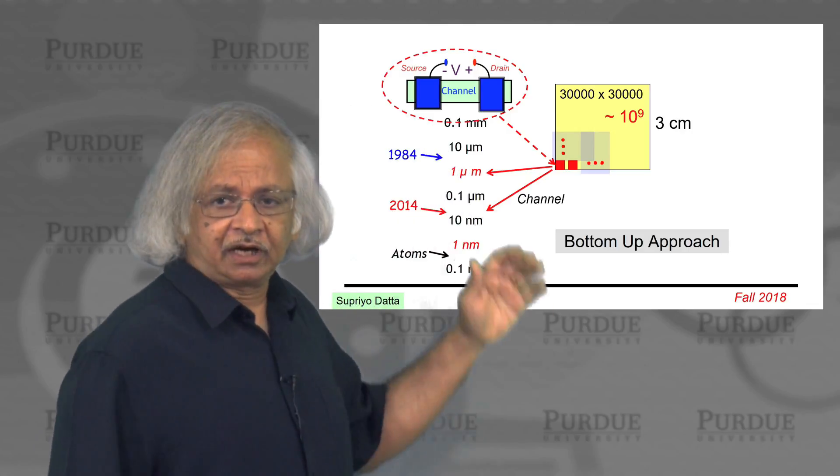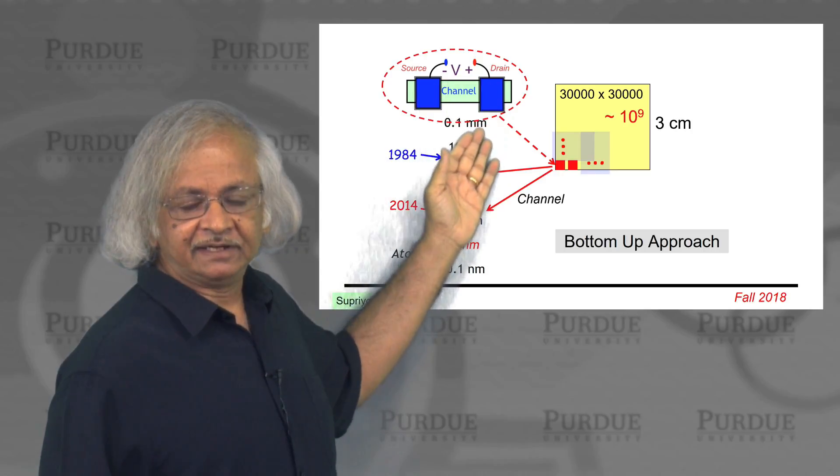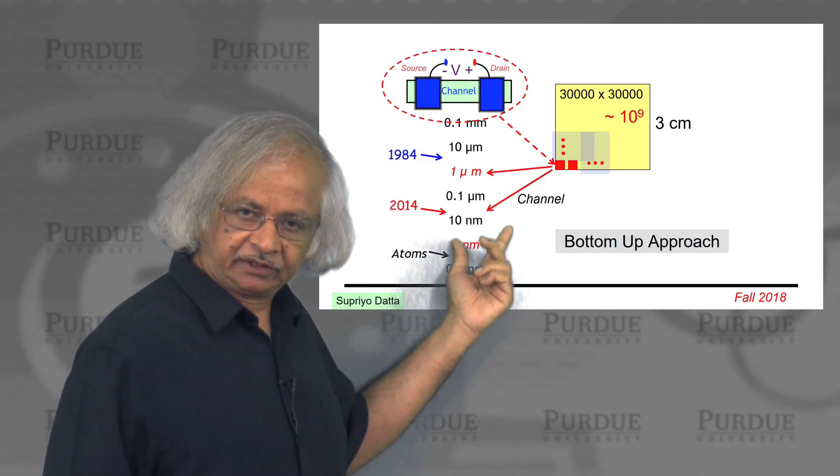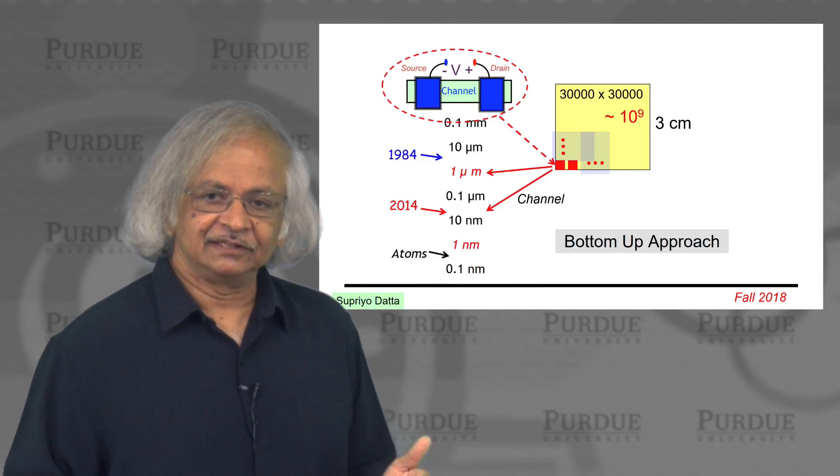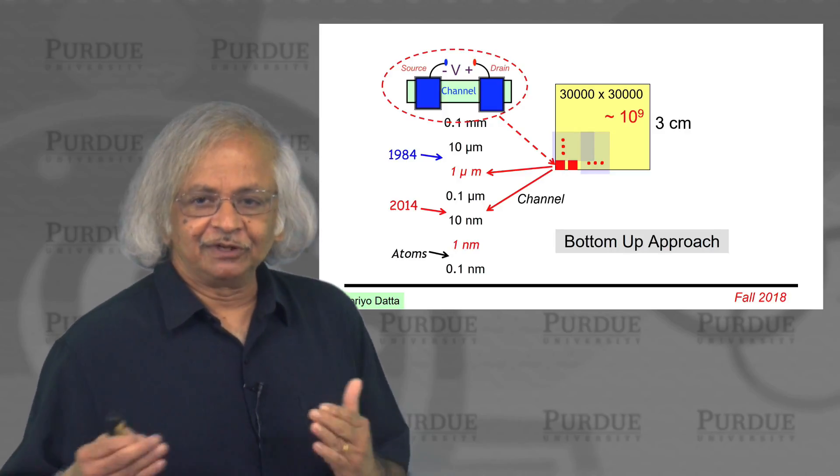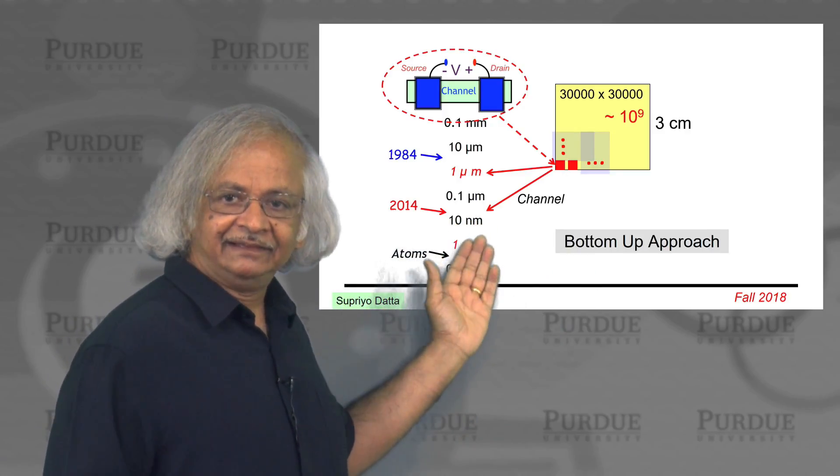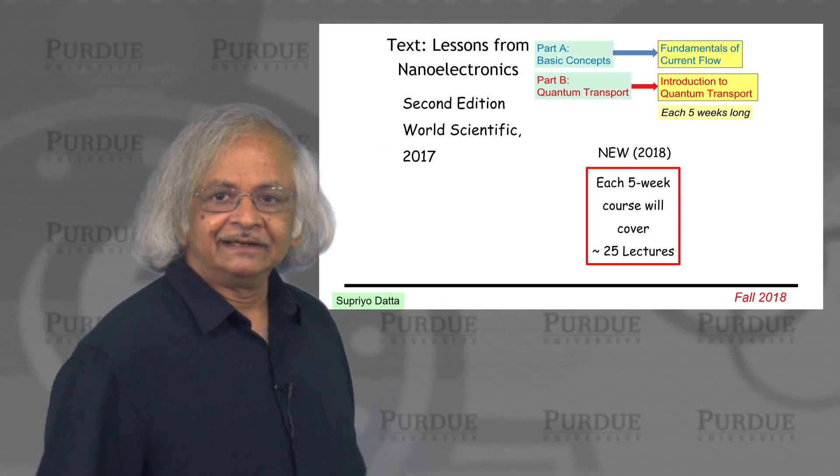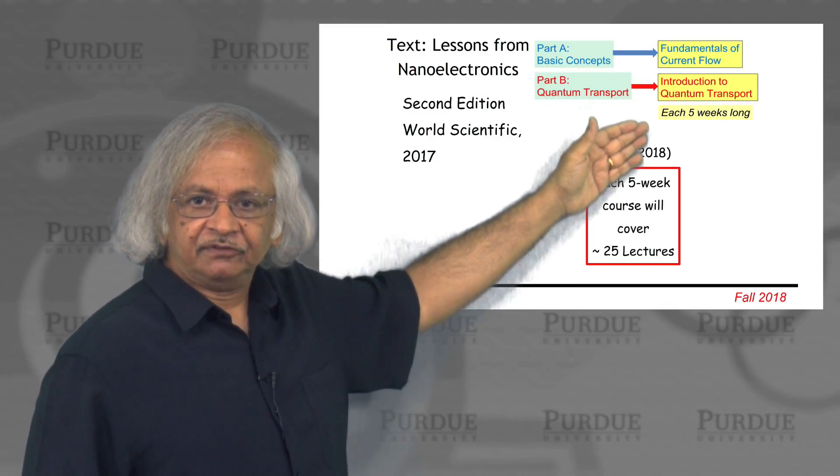But when you think about current flow for historical reasons, we always start from big devices and then try to project that understanding down to small things. And what we felt is that that makes the subject unnecessarily complicated. Instead, we developed this bottom-up approach where we start from small things and then use it to understand big devices. This is the basic approach that underlies the courses that we have developed.